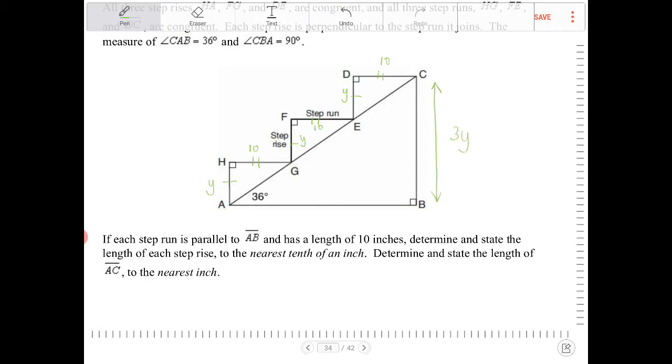So that means the total height here is going to be 3Y. We're going to need that at the end. Since all of the runs are the same, the entire length AB is going to be 30 because it's 3 times 10.